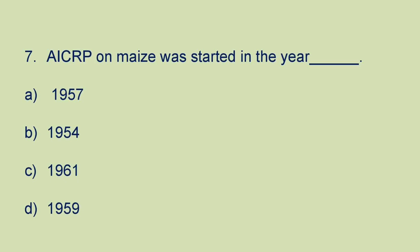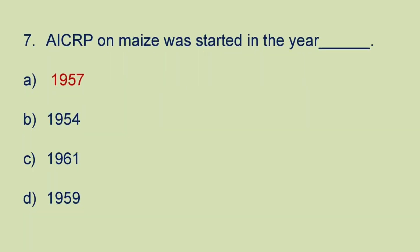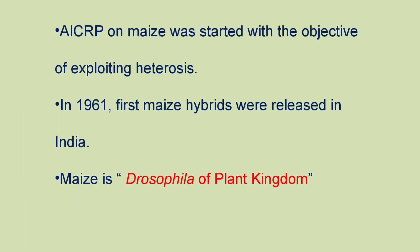Next question: AICRP on Maize was started in the year A) 1957, B) 1954, C) 1961, or D) 1959. The answer is it was started in 1957. It was started with the objective of exploiting heterosis, and in 1961, the first Maize hybrids were released in India. Maize is also called the Drosophila of the plant kingdom.